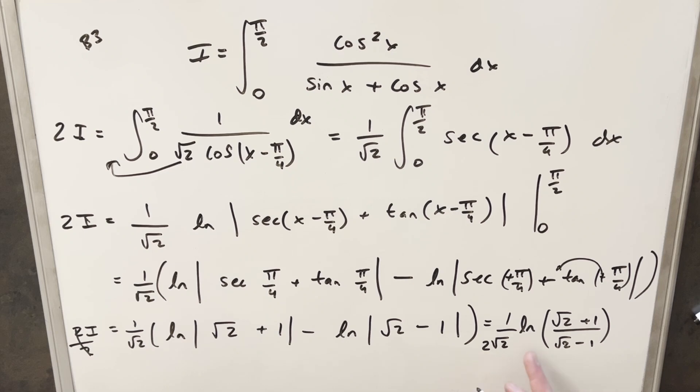And we've got our final solution, 1 over 2 square root of 2, natural log, square root of 2 plus 1 over square root of 2 minus 1. No plus C, just kidding. And that's it. Okay, good problem from UNSW 2020. Thanks everyone for watching. Have a good day.